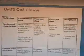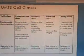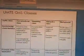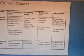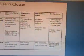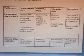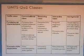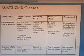The UMTS QoS classes are: conversational class, streaming class, interactive class, and background class. Examples of conversational class are voice, video telephony, and video games. Streaming class examples include streaming multimedia. Interactive class examples are web browsing and network games. Background class examples include background download of emails. The fundamental characteristics differ in the preservation of time relation between information entities and whether the destination accepts data within a certain time.